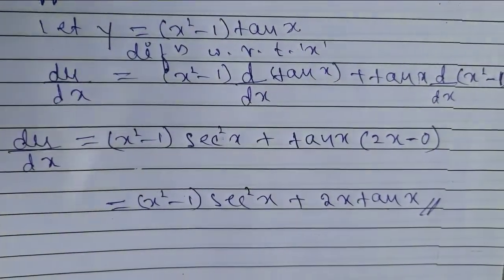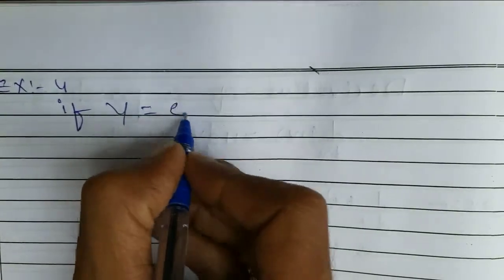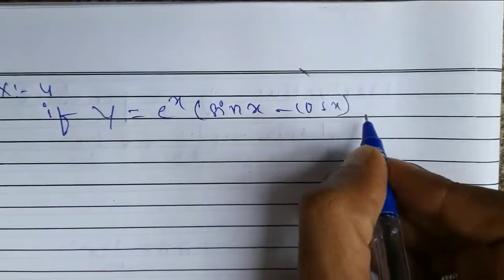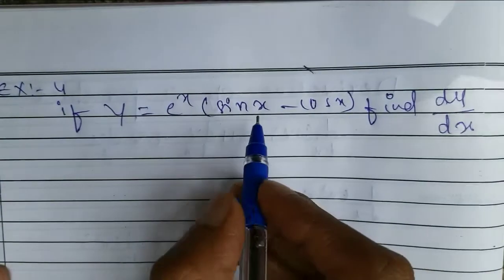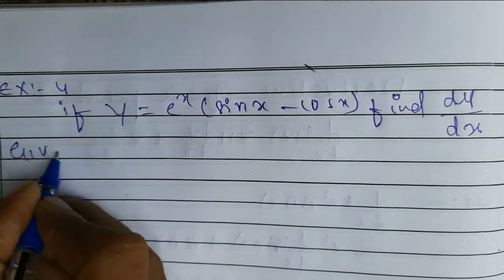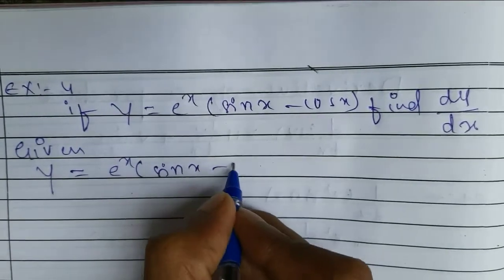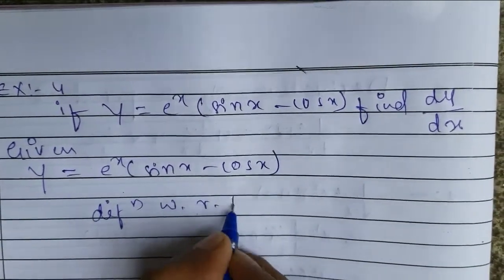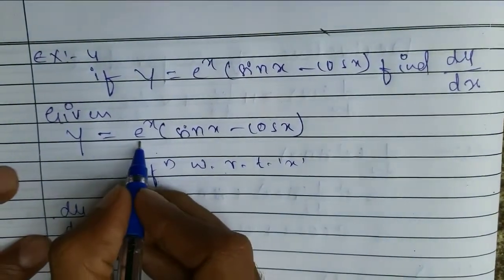Now we will see example number 4: if y is equal to e to the power of x into bracket sin x minus cos x, find dy by dx. The question is also in the form of the product rule. So here I will write the given question first: y is equal to e to the power of x into bracket sin x minus cos x. So differentiating with respect to x, y becomes dy by dx, with u into v.